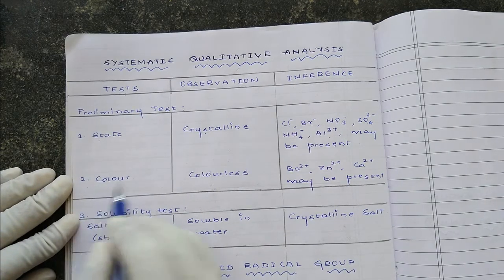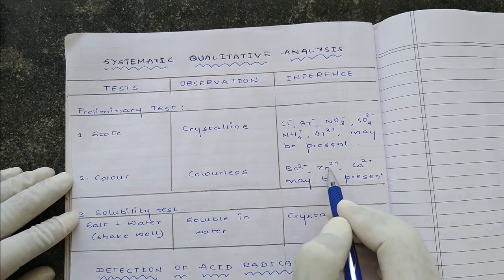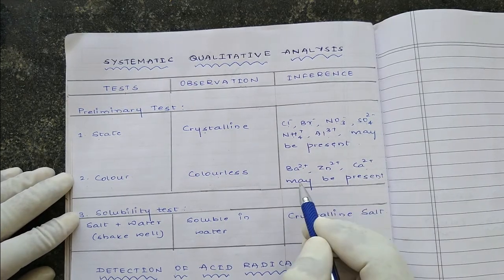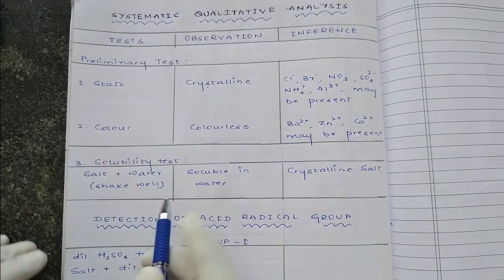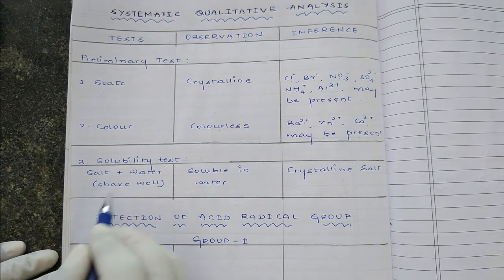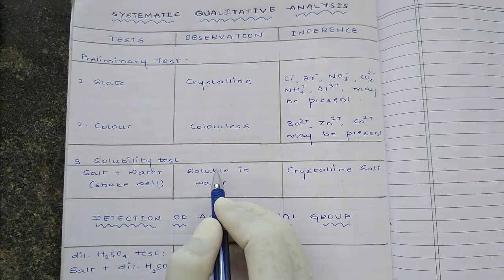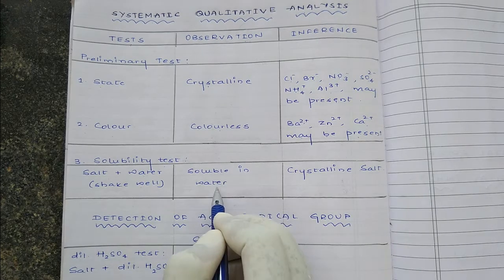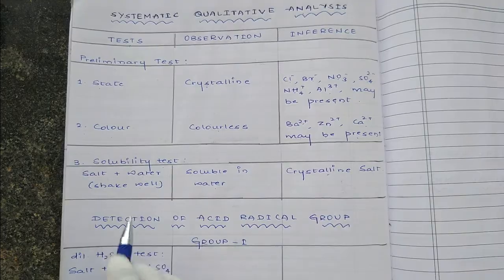Second, color — it is colorless. Barium 2+, zinc 2+, and calcium 2+ ions may be present. The third preliminary test was solubility test: salt plus water, shake well. The observation is soluble in water, and the inference is it is a crystalline salt. So then we will go for detection of the acid radical group.